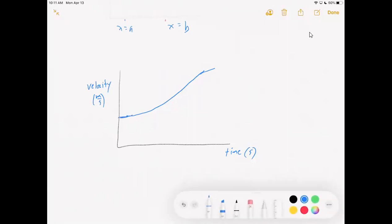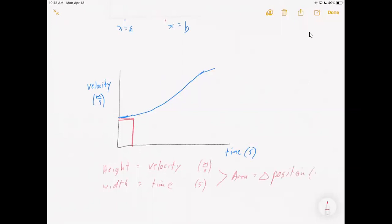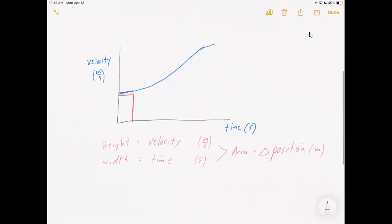So let me switch over to my pencil and let's fill in a rectangle. I'm making it a large rectangle, but its height is a velocity in meters per second. And then its width equals a time in seconds. So when we multiply those out, the area, which is the product of those two things, is equal to a change in position, which would be in meters.